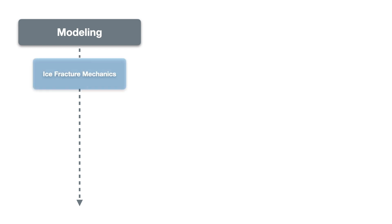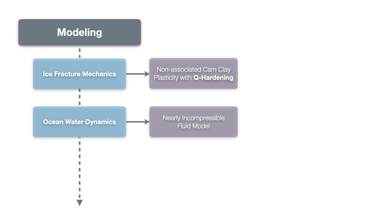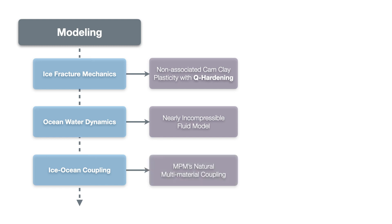The first is to accurately model ice fracture mechanics, and we achieve this through a shear strain modification of the non-associated cam clay plasticity approach that we call Q hardening. The second is to accurately model the surrounding ocean water, which we accomplish using a nearly incompressible fluid model. And finally, we need to capture the rich interactions between the ice and seawater. Fortunately, the material point method naturally affords us this solid-fluid coupling.